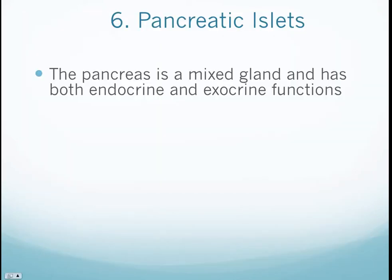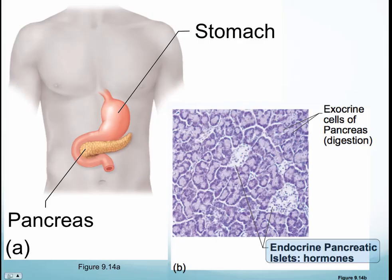The next endocrine gland is the pancreatic islets — a mixed gland, being both endocrine because it secretes hormones, and exocrine because it secretes digestive enzymes. The pancreas kind of looks like baby corn if you've done a fetal pig dissection in Bio 130 lab.